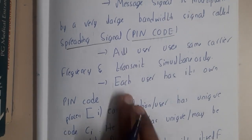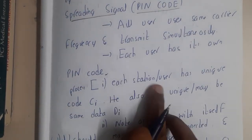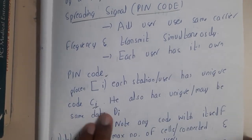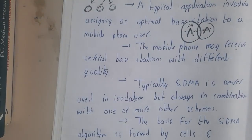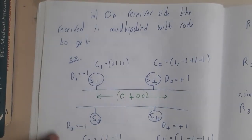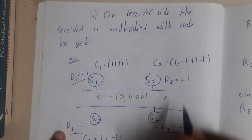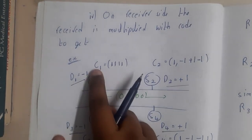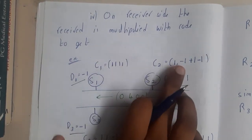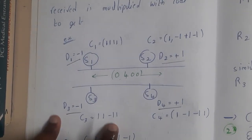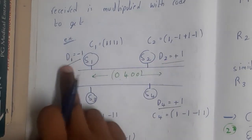Each user has his own unique PN code. The first step: each station or user has his own unique code and his own data to send. For example, we have four stations: S1, S2, S3, S4. Each has a single-bit data of either +1 or -1, and each has a four-bit code. For instance, one station's code might be: [1, -1, 1, -1], and another [1, 1, -1, 1, -1, 1]. This is the code only that user knows, and this is the data they want to send.